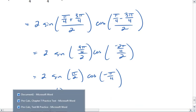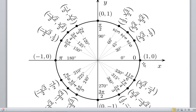Then cosine of negative pi fourths, this means we're going clockwise, and that puts us down here.